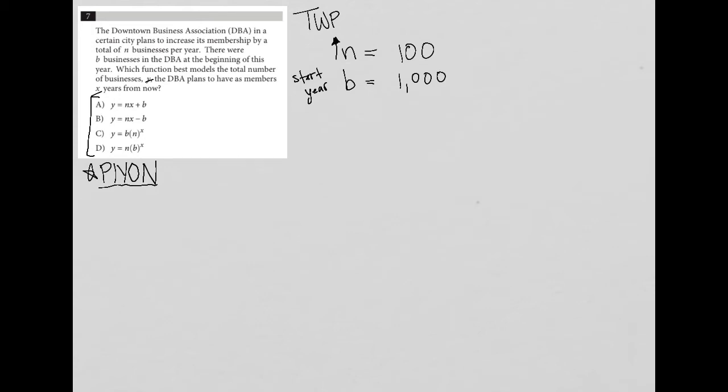So let's say we already have b or 1000 businesses at the beginning of the year, and we want to add 100 per year. The question then goes on to ask which function best models the total number of businesses, y. So y represents the total number of businesses. The DBA plans to have as members x years, so x represents years, x years from now. So here's how the rest of this works.